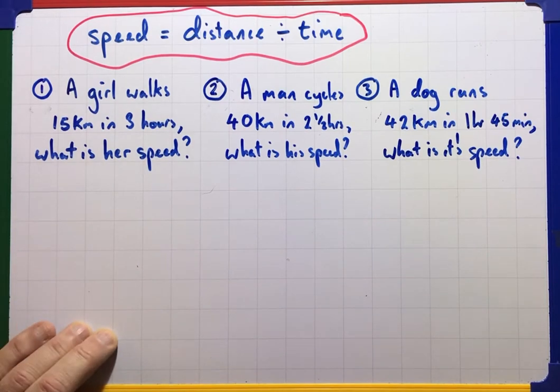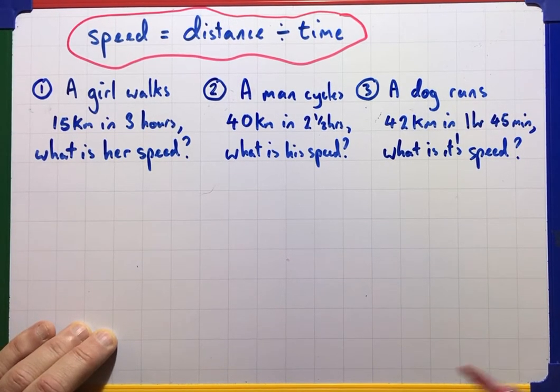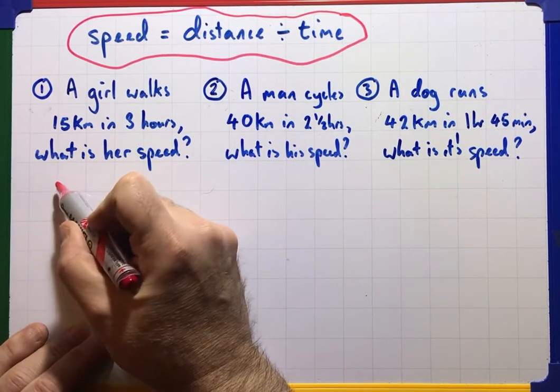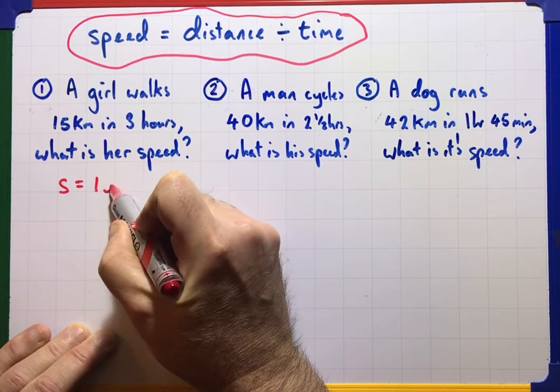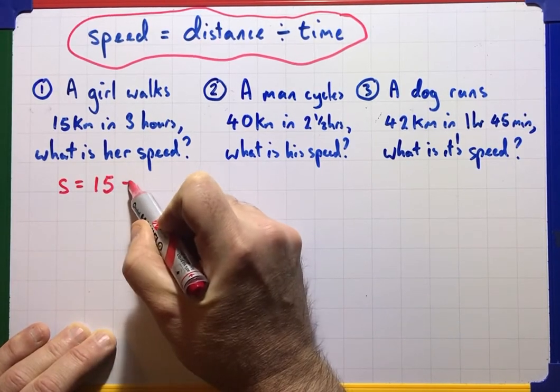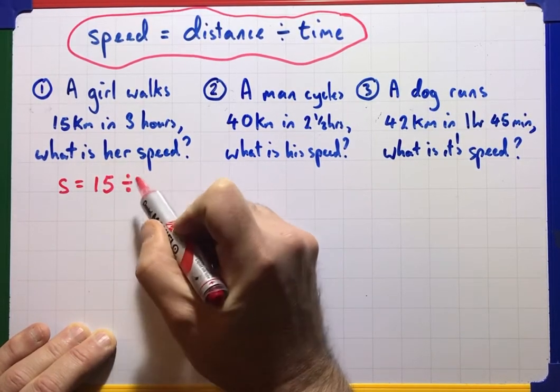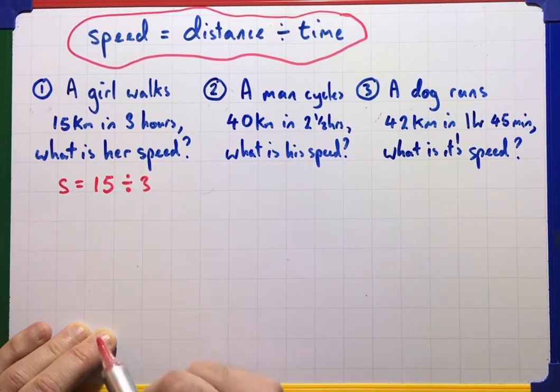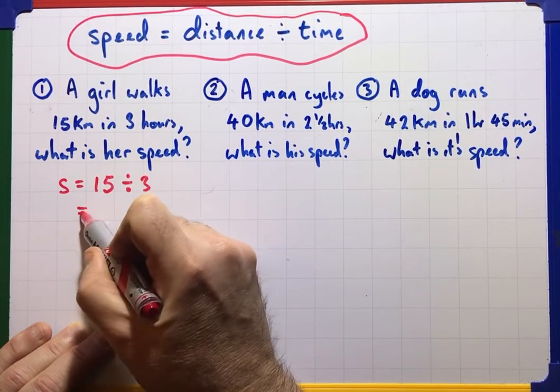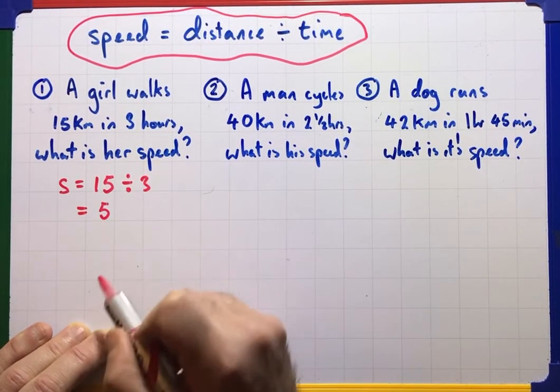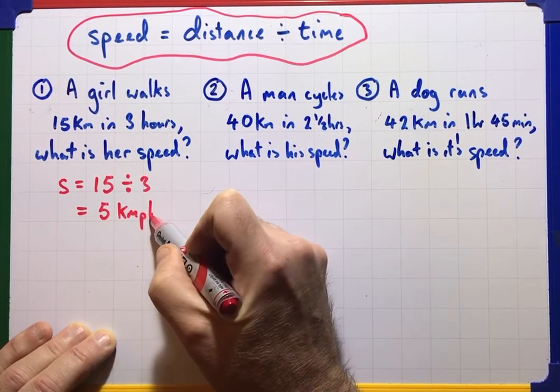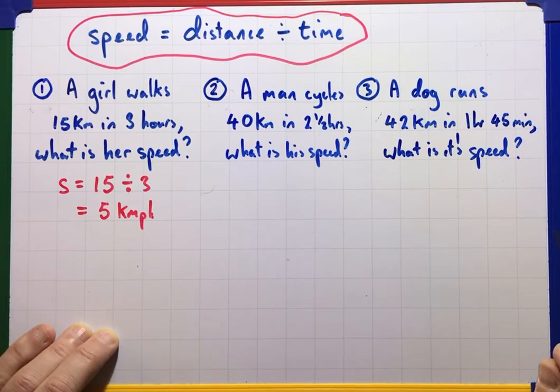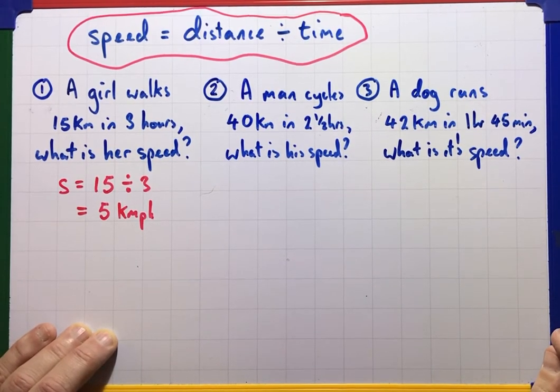First one's fairly straightforward. A girl walks 15 kilometres in 3 hours. What is her speed? Well, we know that speed is distance, which is 15, divided by time, which is 3. So that gives us 5, and remember the units, kilometres per hour. OK, that would be that one finished.